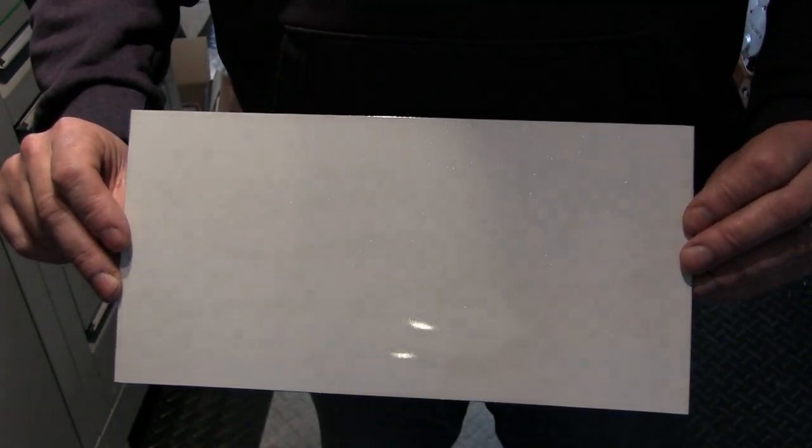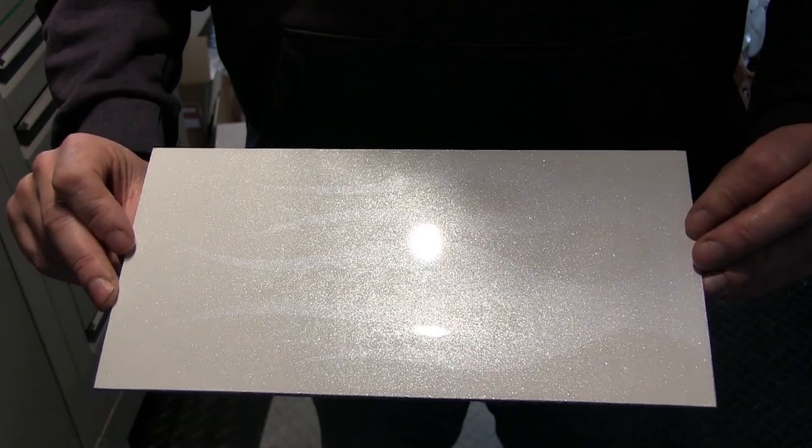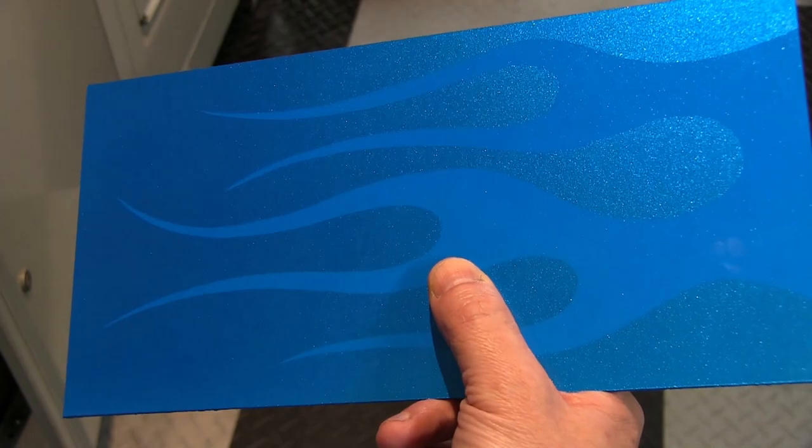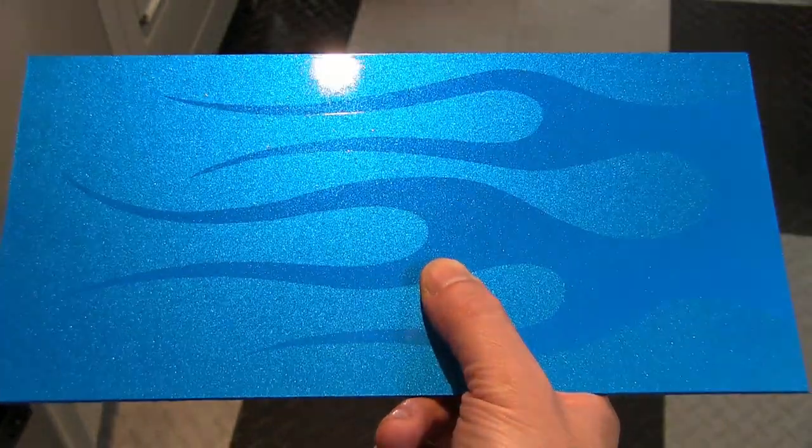And you see the flames come in and out of existence depending on what angle you're viewing it. Obviously, this would be exaggerated on a curved surface. But the flames do actually disappear as opposed to the subtle flames that are visible from every angle.